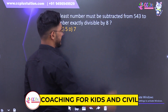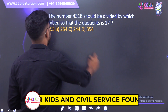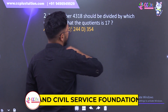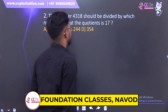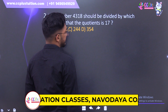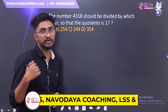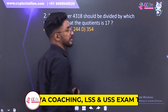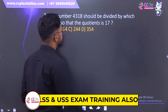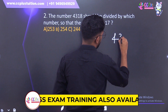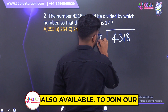The next question: the number 4318 should be divided by which number so that the quotient is 17. 4318 should be divided by which number so that the quotient is 17.